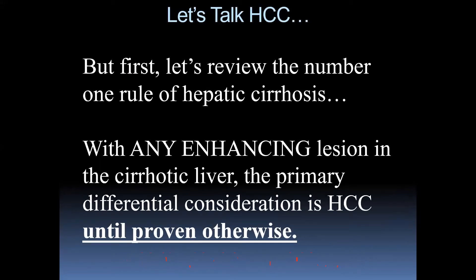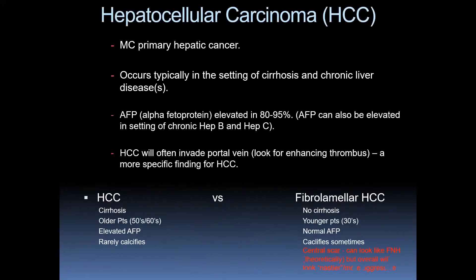Now let's talk about HCC. First, the number one rule of hepatic cirrhosis: with any enhancing lesion in the cirrhotic liver, the primary differential consideration is HCC until proven otherwise. That is my first, second, and third consideration. Most common primary hepatic cancer, typically occurring in the setting of cirrhosis and chronic liver disease. Elevated alpha-fetoprotein in up to 95% of cases — though AFP can also be elevated in chronic hepatitis B and C, so the higher the AFP, the more suspicious you should be. HCC likes to invade vessels like portal veins, so look for enhancing thrombus.